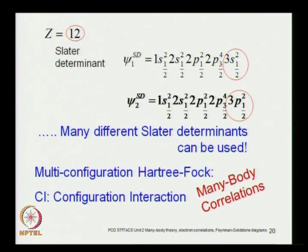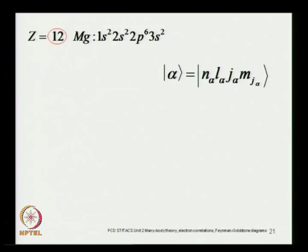Even the Hartree-Fock in a certain sense is a many-body theory — it also has a correlation, but the only correlation it has is the exchange correlation. The name 'many-body theory' is typically reserved for formalisms in which you go beyond the Hartree-Fock, consider the configuration interaction, and include the Coulomb correlations — not just the Fermi correlations or exchange correlations. These are what are typically called many-body correlations.